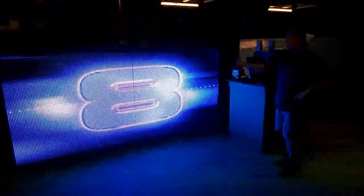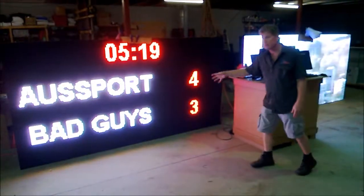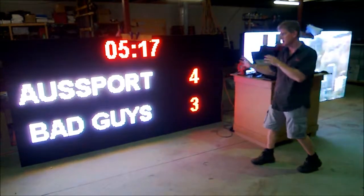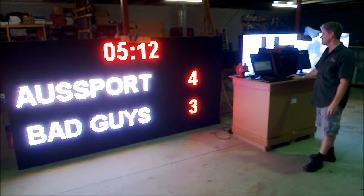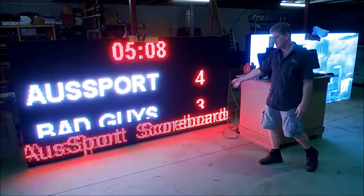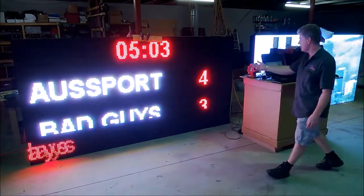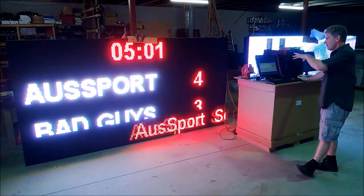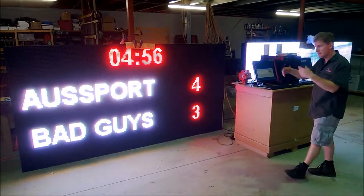This may look a bit bright — that's the video element we've put on there. It plays and then goes back to your scores, so you can show a sponsor ad or whatever you like, and when you stop it, it goes straight back to the scores. You can also put scrolling text messages across the screen at any time, and when you stop that, it returns to the score as well.